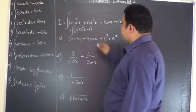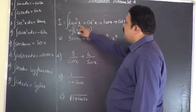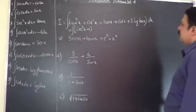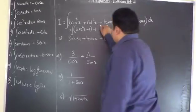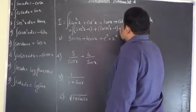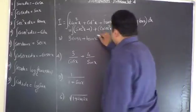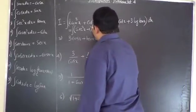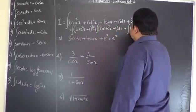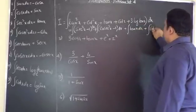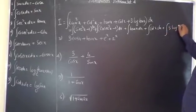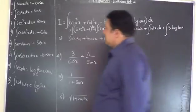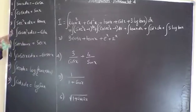So I write the integrand as (sec² x minus 1) dx, because tan² x is sec² x minus 1. Plus cot² x, where cot² x is cosec² x minus 1, into dx. Plus integral tan x dx, plus integral cot x dx, plus integral 3 log tan x. Now we need to apply the formulas — take 30 seconds to go through the formula list.